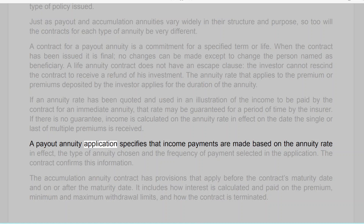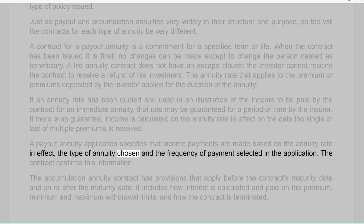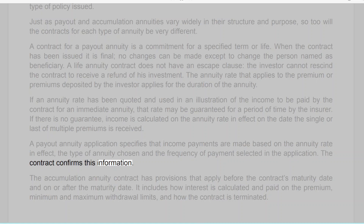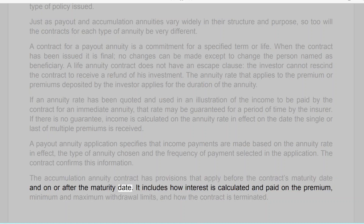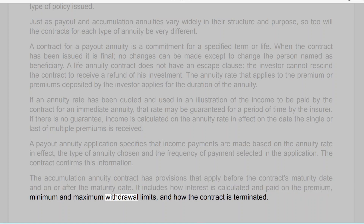A payout annuity application specifies that income payments are made based on the annuity rate in effect, the type of annuity chosen, and the frequency of payments selected in the application. The contract confirms this information. The accumulation annuity contract has provisions that apply before the contract's maturity date and on or after the maturity date, including how interest is calculated and paid on the premium, minimum and maximum withdrawal limits, and how the contract is terminated.